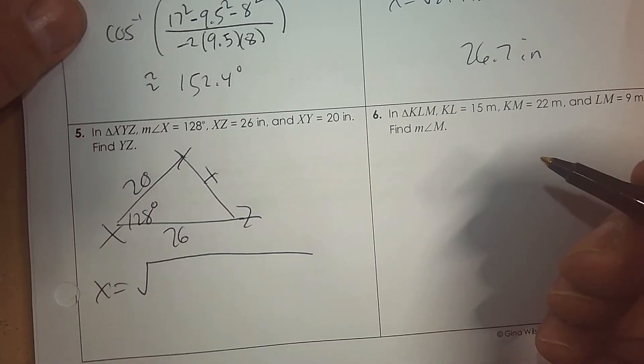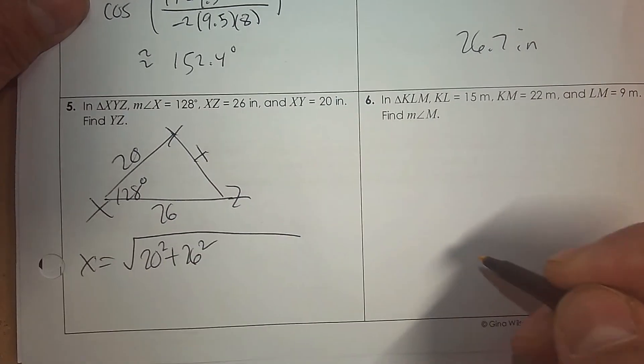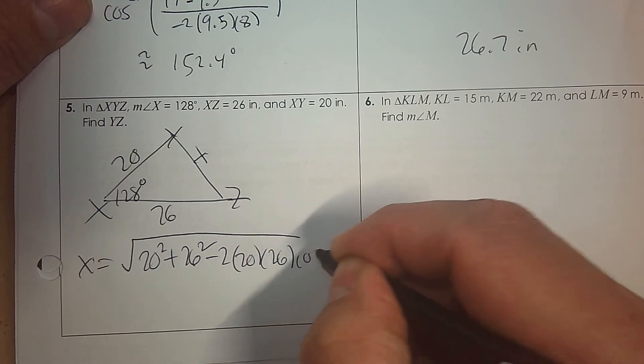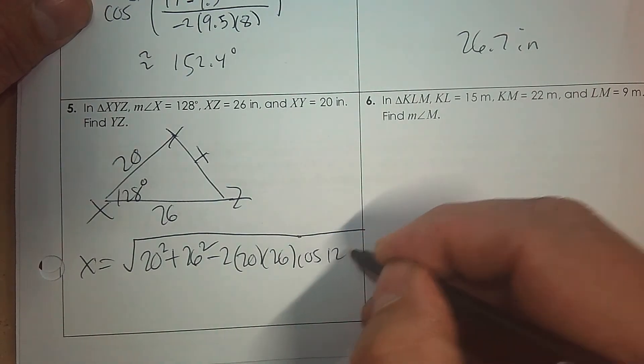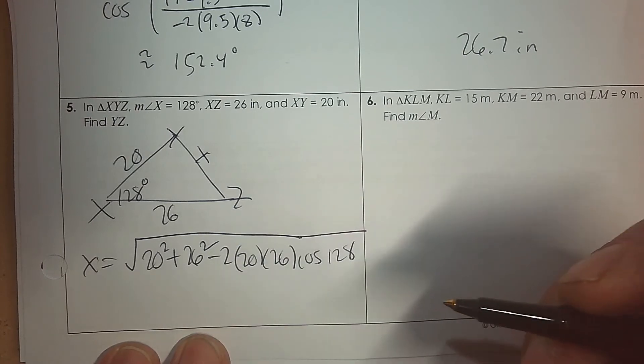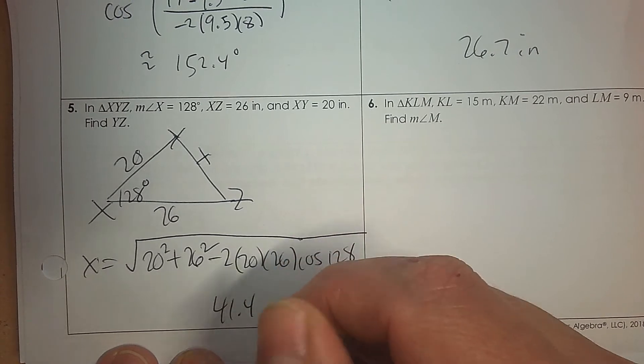So if I want to find x, it's a big square root. And then set it up. Pick a side, square it, plus pick the other side, square it. Subtract 2, and then the same, multiplying, and then the cosine of the angle in between them. And then be careful how you type it in. And the answer is 41.4 inches.